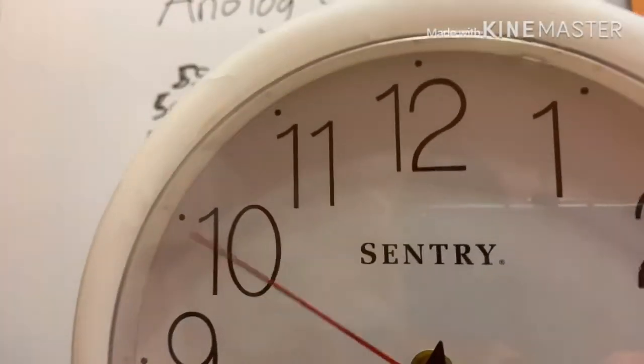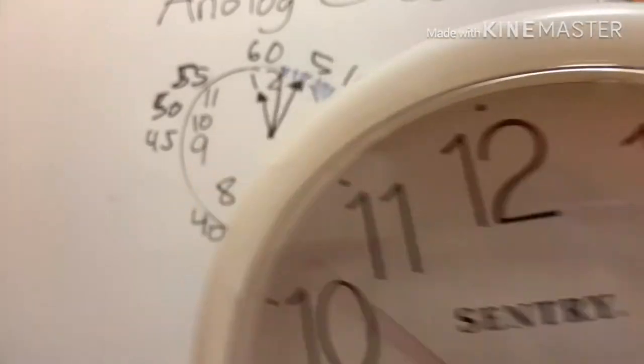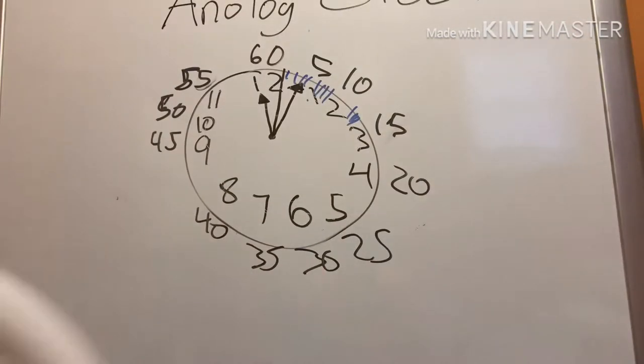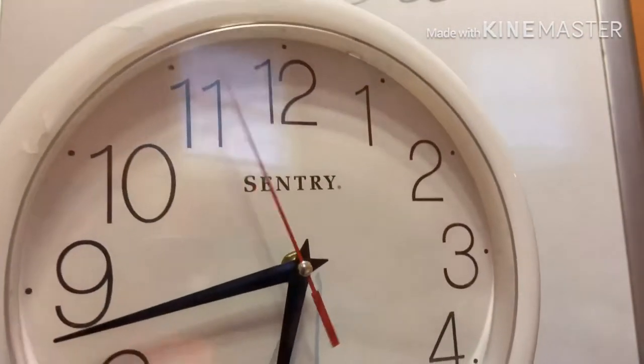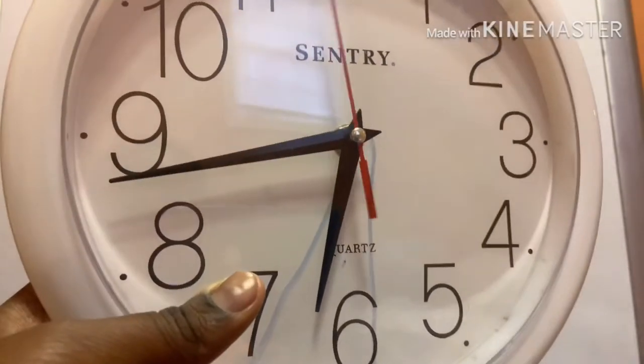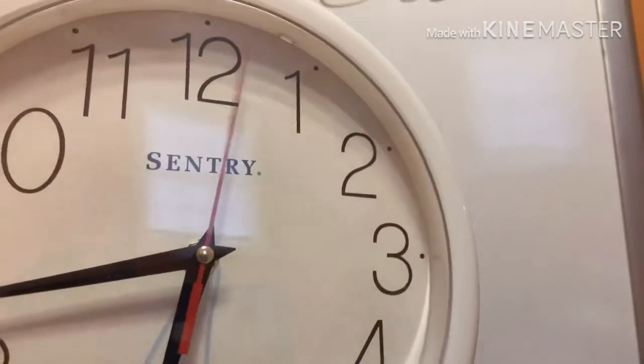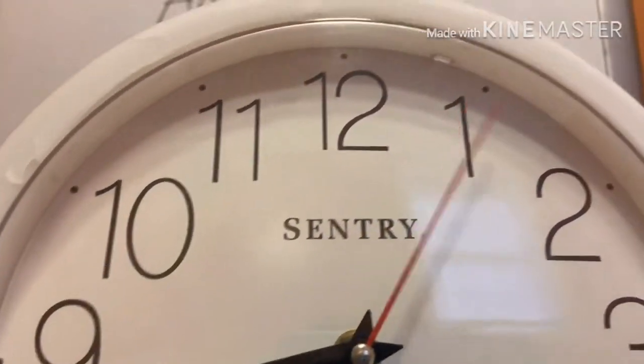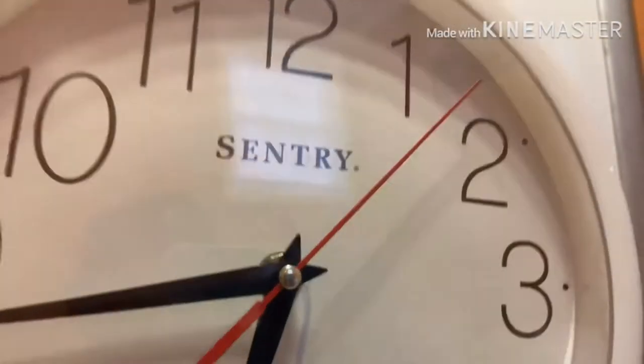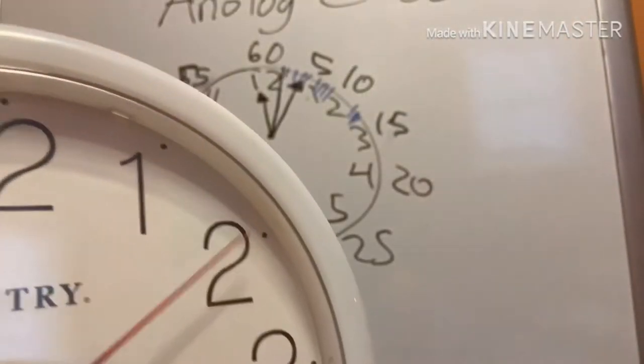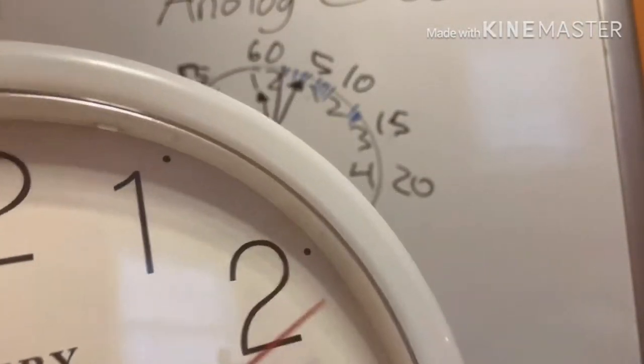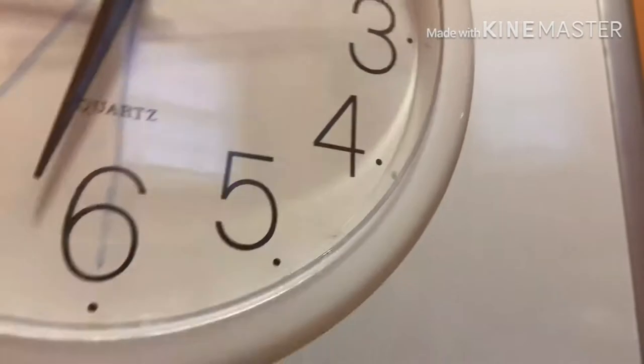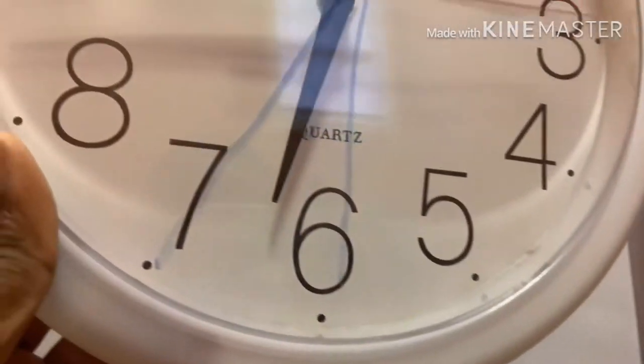When you're doing this, whatever the minute is, if it's on the one, two, three, four, five, six, seven, eight, nine, ten, eleven, or twelve, it's counted by five. So one is five, two is ten, three is fifteen, four is twenty, five is twenty-five, six is thirty.